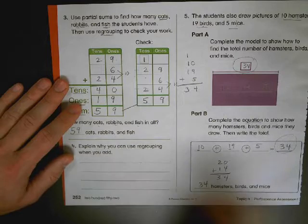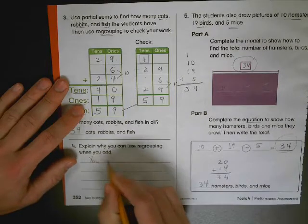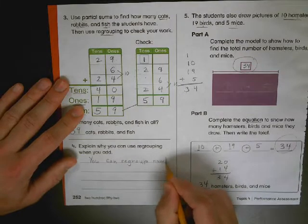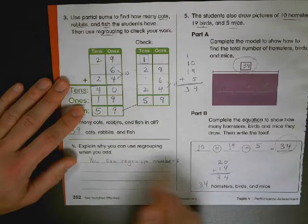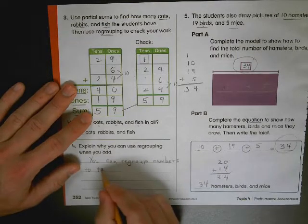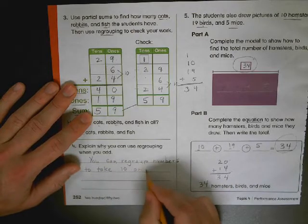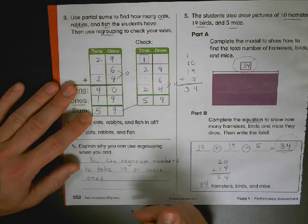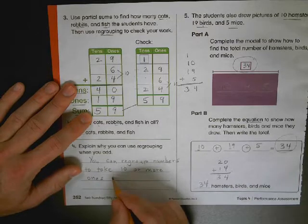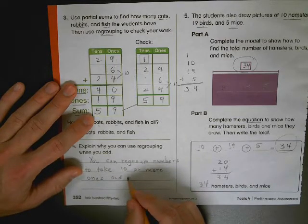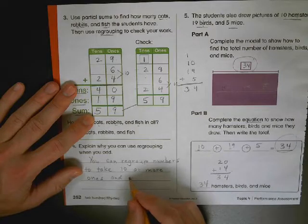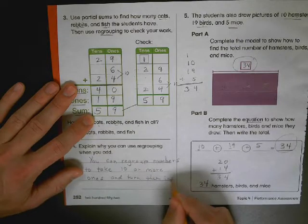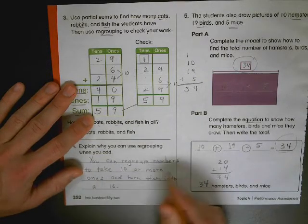Down here it says explain why you can use regrouping when you add. You can regroup numbers to take ten or more ones, and eventually it's not just going to be ones, it'll be tens and hundreds and thousands. You can regroup numbers to take ten or more ones and turn them into a ten. Regrouping them.